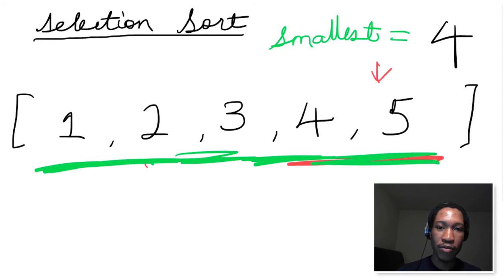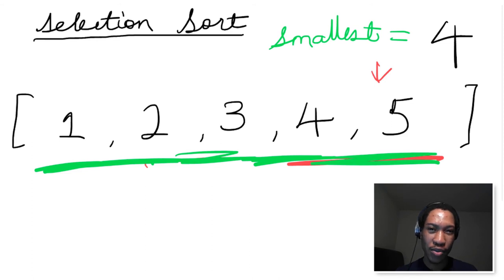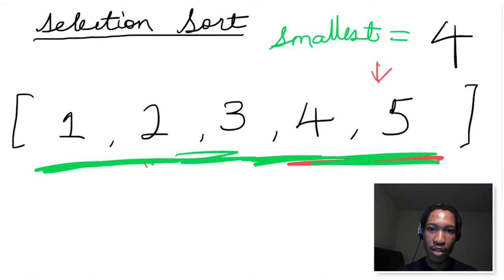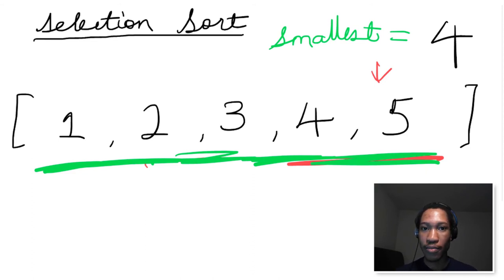And now we have 1, 2, 3, 4, 5 — which is perfect. This is exactly how selection sort goes. It's a fairly simple sorting algorithm to wrap your head around. If you couldn't get it the first time, I totally understand — I advise you to watch this video a few times and I promise it's going to click. So let's dive into the code for selection sort.